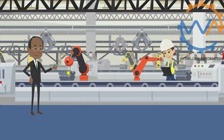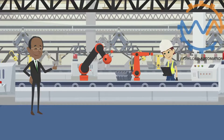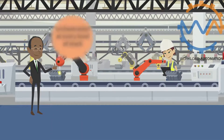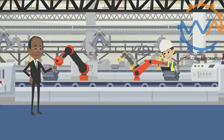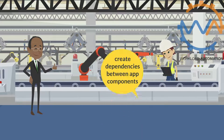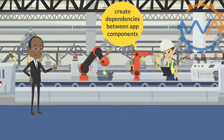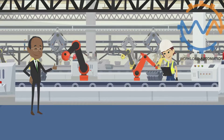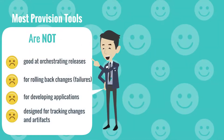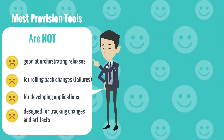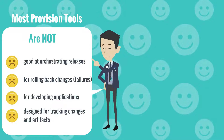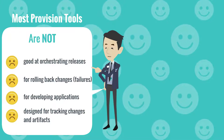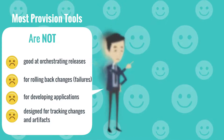When releasing applications using these tools, you need orchestration at every level of your stack to make it work, and the capability to create dependencies between application components and between each step in the process. Most provisioning tools are not good at orchestrating releases, rolling back changes, or developing applications, and are also not designed for tracking changes.